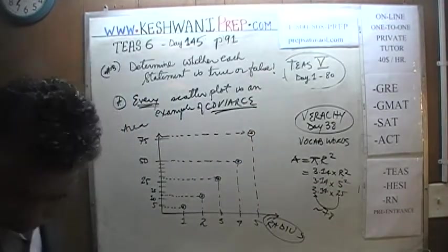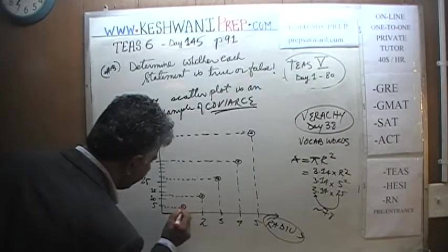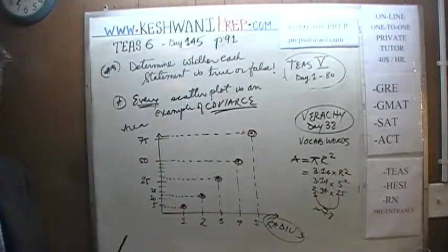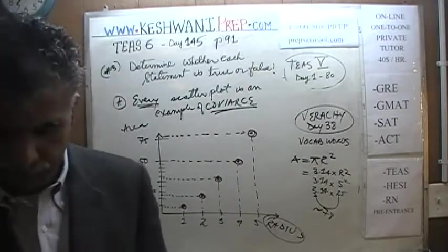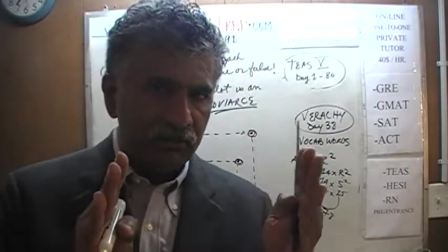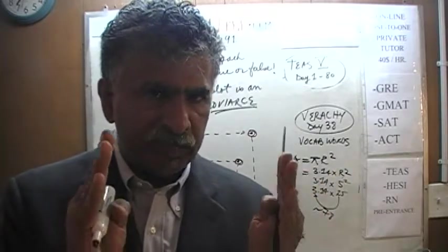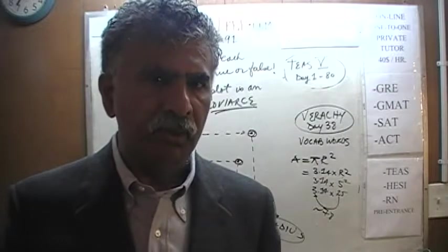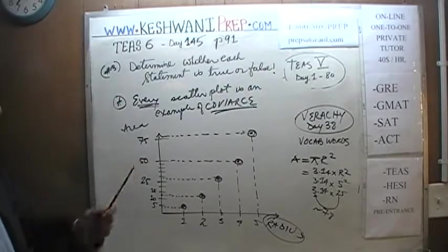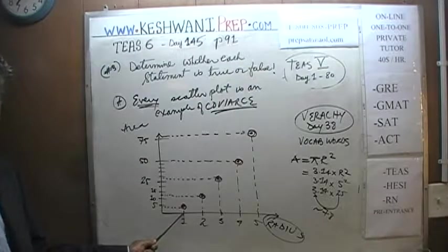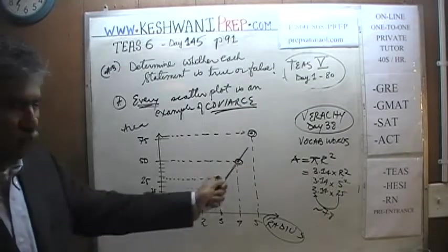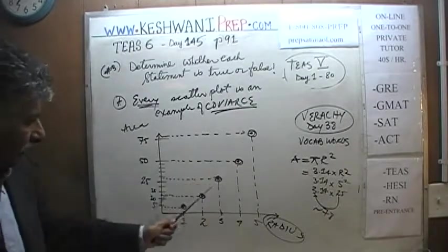These 5 points that we see here — even though there are only 5 points — it is still what is known as a scatter plot. A scatter plot simply means: how are the points scattered on the two axes? When we take the x-coordinate and y-coordinate of each point and plot them, how are they scattered on that graph? In this case, there is a definite covariance. As you can see, they vary together — and not only that, this happens to be positive covariance. As the radius goes up, so does the area.